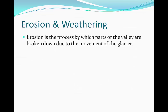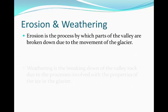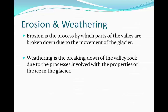Erosion is the process by which parts of the valley are broken down due to the moving of the glacier. However, weathering is the breaking down of the valley rock due to the processes involved with the properties of ice in the glacier. Both are somewhat synonymous, but they do have differences. Erosion is more of the processes due to movement, whereas weathering is due to the processes involved with the actual properties of the ice in the glacier.